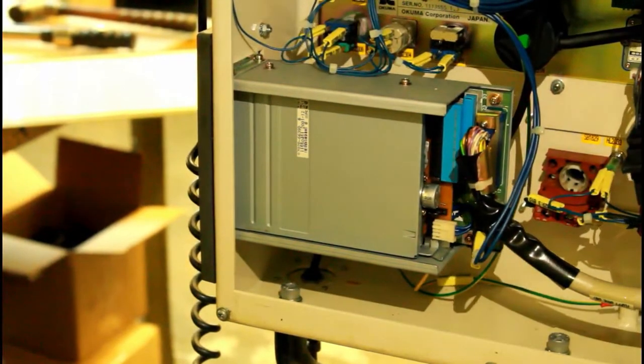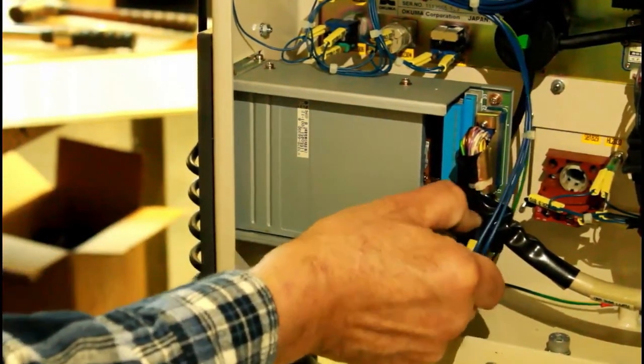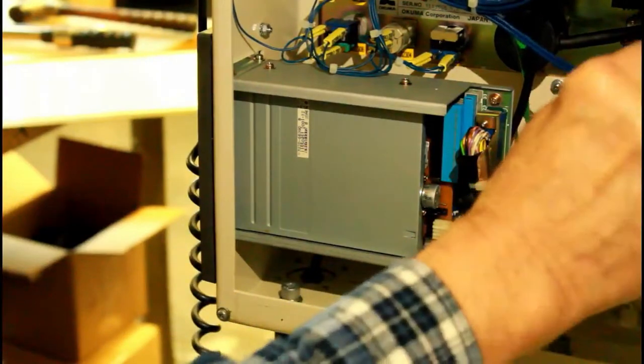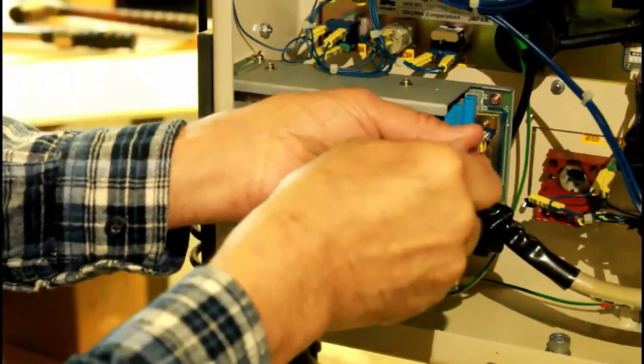First, open the control panel and remove the power cord. Remove the ribbon cable which is connected to the motherboard. Using a small screwdriver, remove the screws.